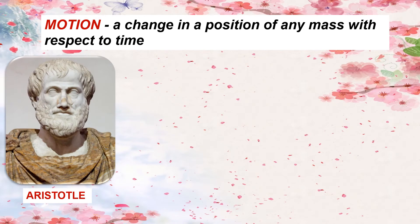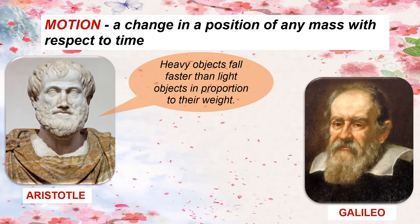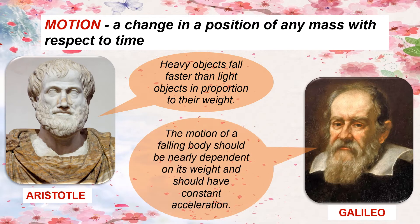Aristotle thought that heavy objects fall faster than light objects in proportion to their weight. Galileo argued that the motion of a falling body should be nearly independent of its weight and should have constant acceleration, through careful measurements of distances and time experiments.